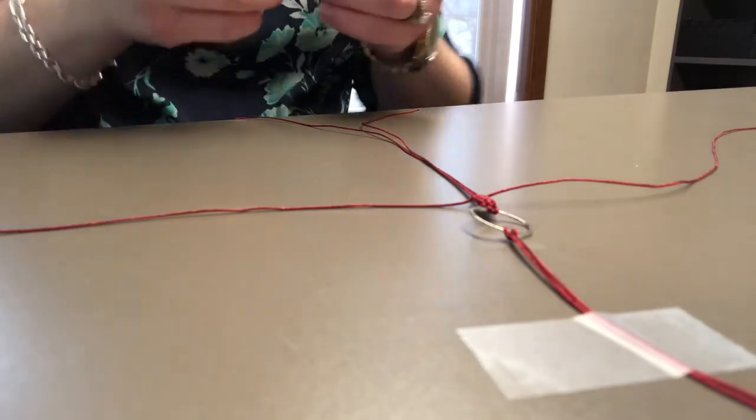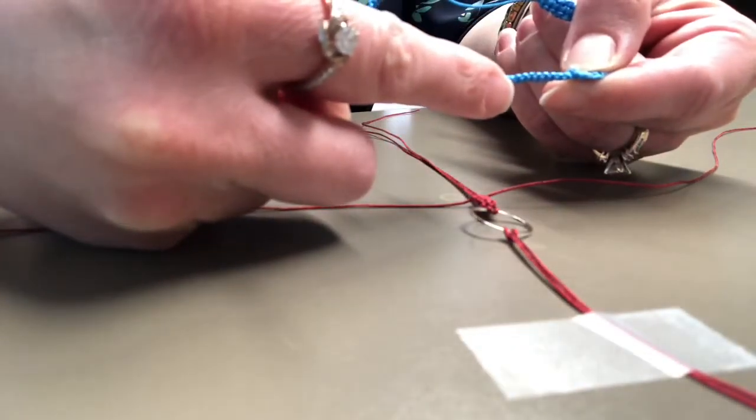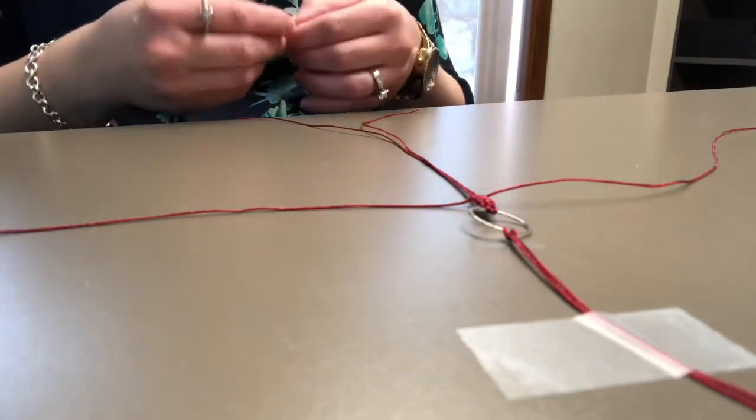What I did instead is I used the side loops and just strung it through there. Those are two options depending on the tightness of your knots.